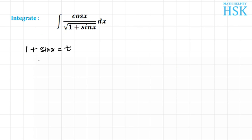Differentiating both sides with respect to x, I am going to get cos x dx is equal to dt. So we can write this as, this cos x dx will be replaced by dt, and under root of 1 plus sin x will become under root of t.